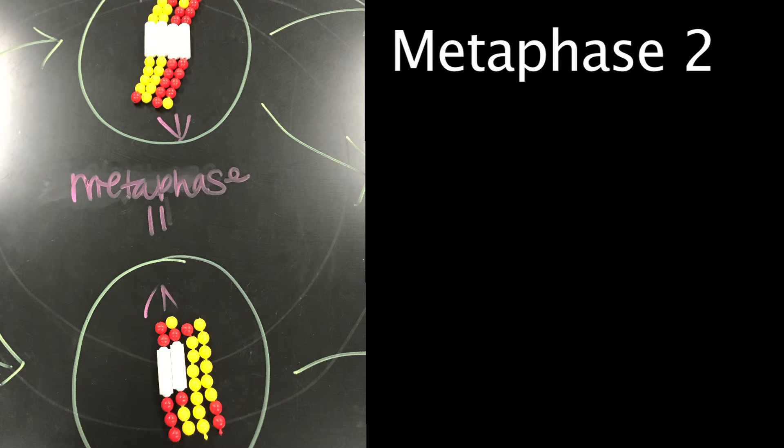Metaphase 2 is similar to mitosis, with spindles moving chromosomes into the equatorial area and attaching to opposite sides of the centromeres in the kinetochore region.